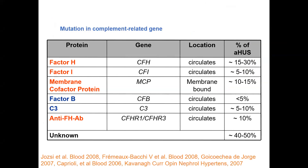These are the regulatory proteins involved mainly in the alternate complement pathway. Factor H constitutes 15 to 30% of atypical HUS cases, followed by membrane cofactor protein at 10 to 15%, then factor I, factor B, C3, and anti-factor H antibody. Mutation in any of these complement-related genes can lead to atypical HUS.